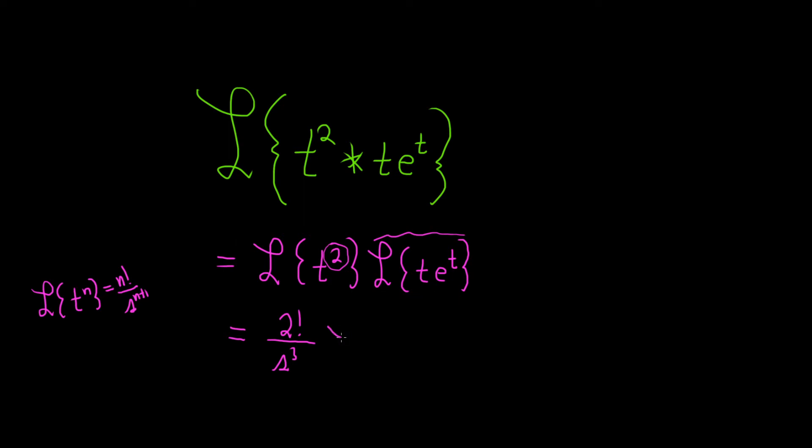So what you can do is you can drop the exponential and then replace it with the shift. So the shift will take s to s-1. And the reason it's 1 is because there's a 1 here, and there's a 1 there.